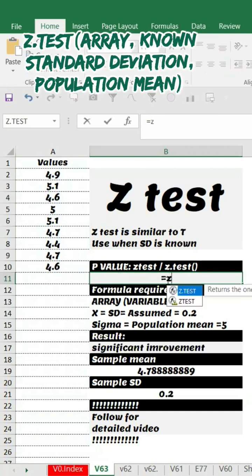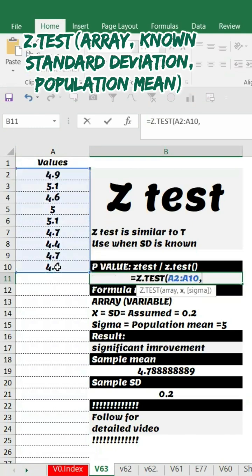The z-test formula works well in Excel. So z.test or ztest - array, this is my array, comma x in this case 0.2 which is the known standard deviation, and sigma value here I will say 5, that is the population mean.